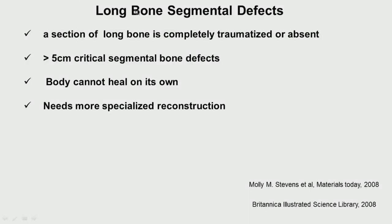What is a long bone segmental defect? A section of long bone is completely traumatized or absent. This can happen due to congenital disease from birth, or due to injury where it is not possible to fix that portion, leaving a large gap. It can also result from inflammation, infection, or removal of cancerous bone. Anything above 5 centimeters is called a critical segmental bone defect — the body cannot heal by itself.